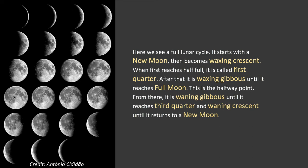Once you get to full moon, everything just reverses. It's fully illuminated and can only get less, so it's waning. But it's still more than half full, so it's waning gibbous. Eventually we reach the third quarter, then waning crescent, back to new moon — and it repeats on a cycle of about a month. Early astronomers would have recorded this and noticed it takes about 30 days for the moon to go through this full cycle.